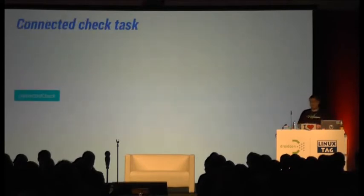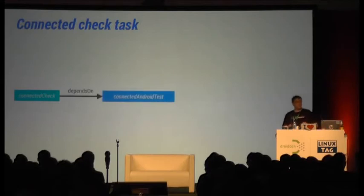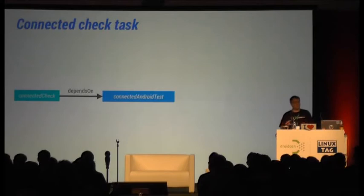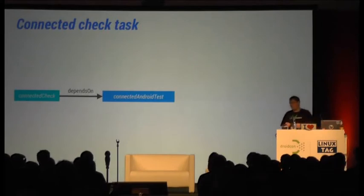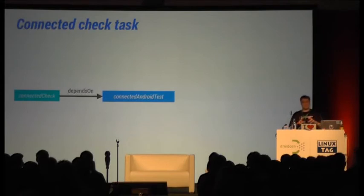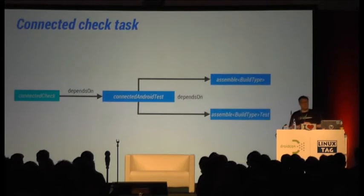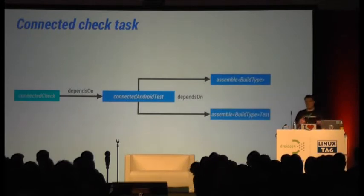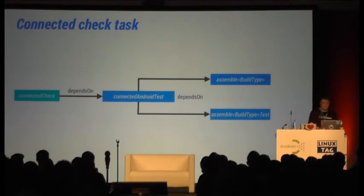How does the connectedCheck task actually work? In Gradle, tasks depend on other tasks — that's how you define which tasks to run. The connectedCheck task depends on the connectedAndroidTest task, and that task in turn depends on the assembleBuildType and assembleBuildTypeTest tasks to build your APKs for testing.